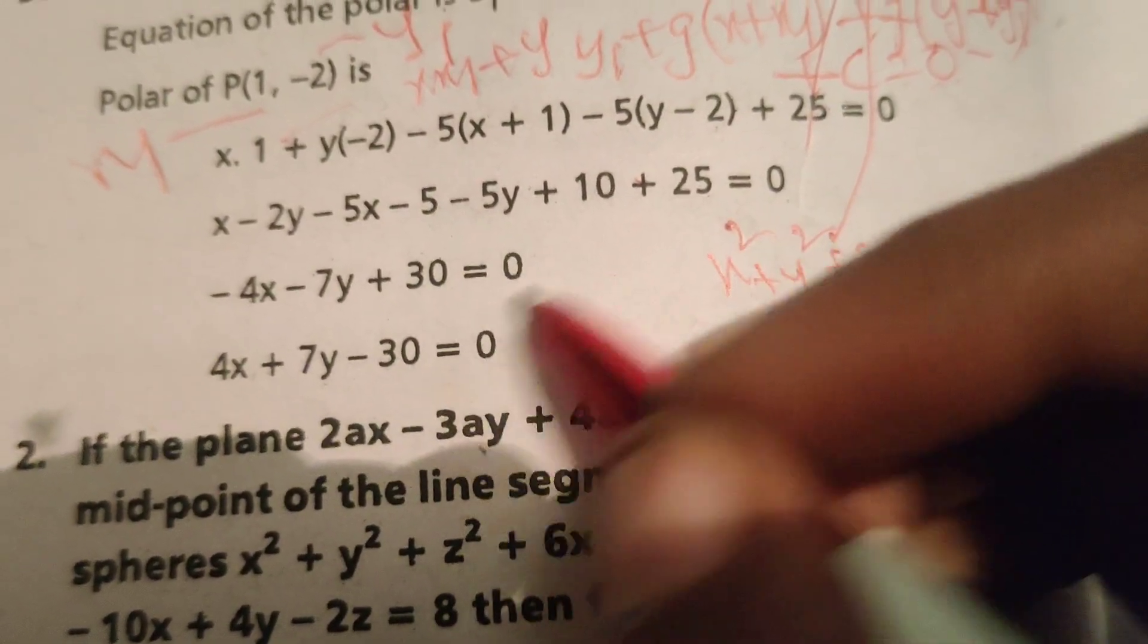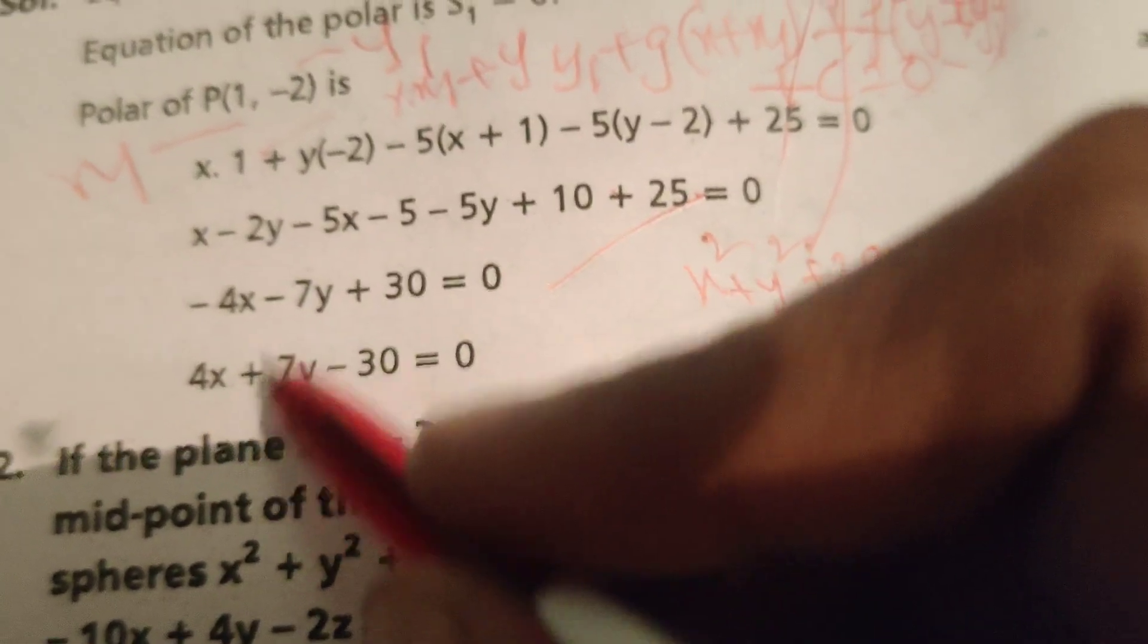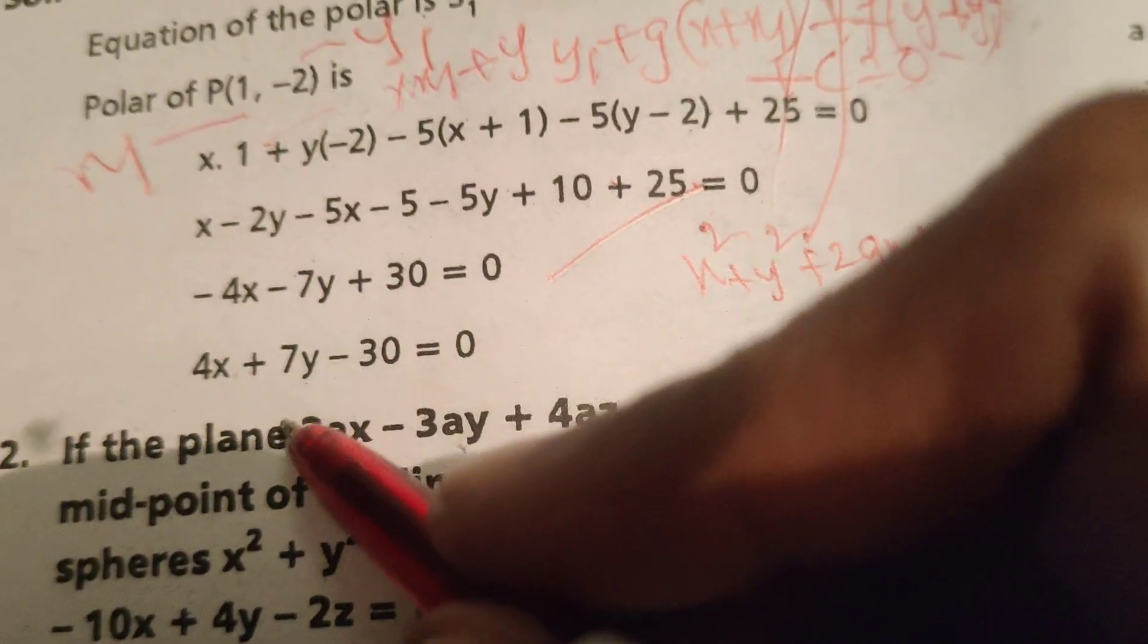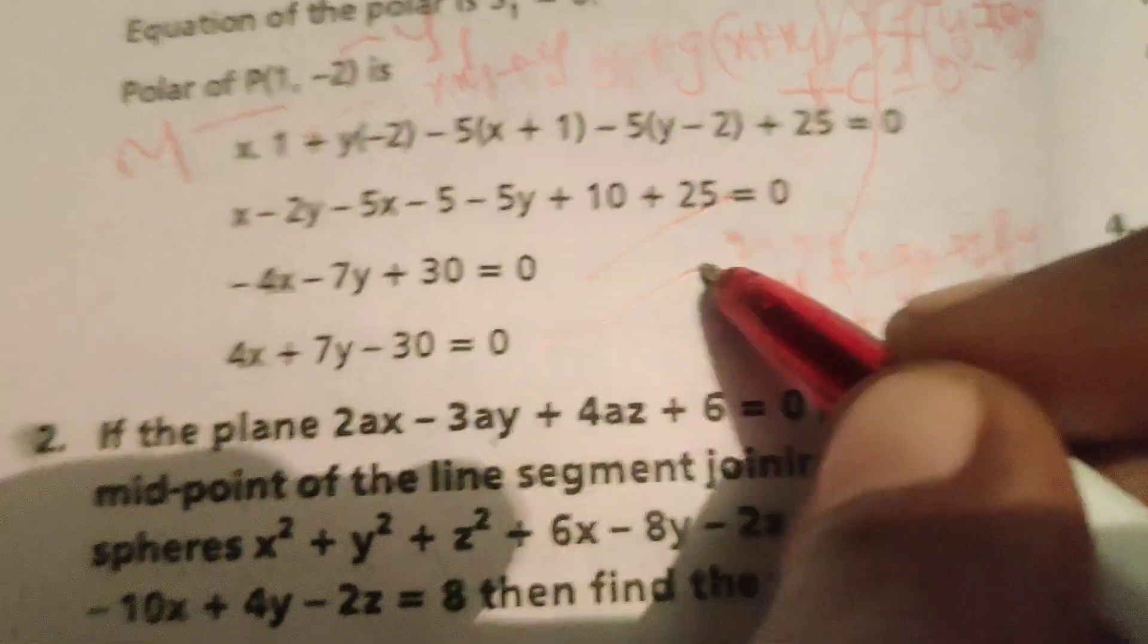Multiplying through by -1, we get 4x + 7y - 30 = 0.